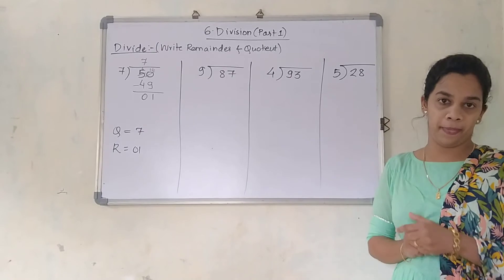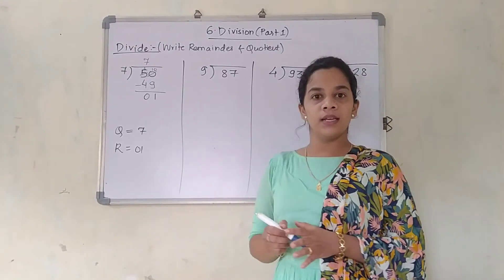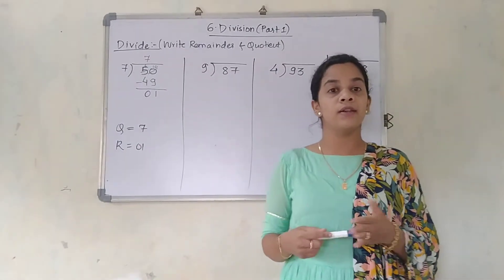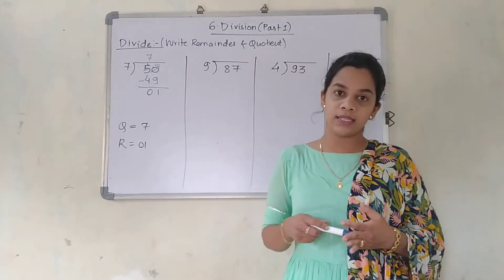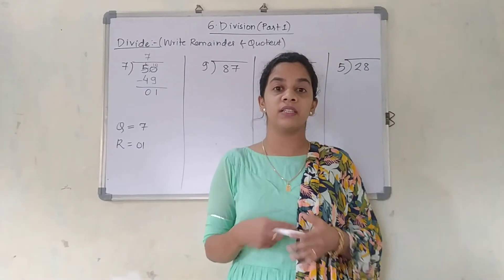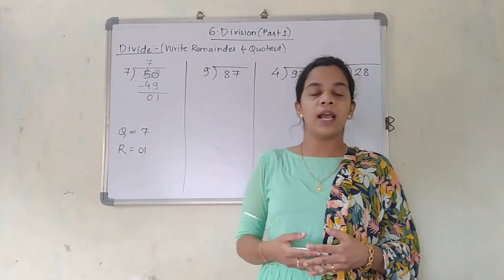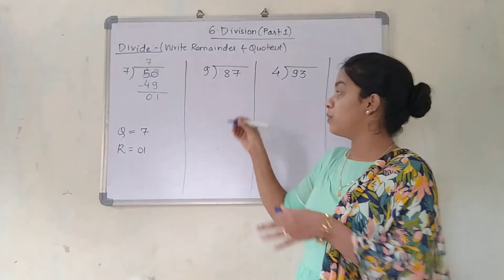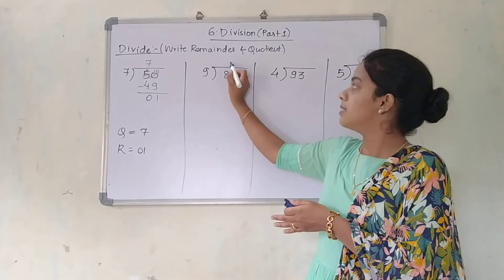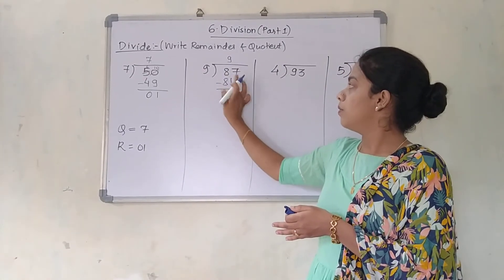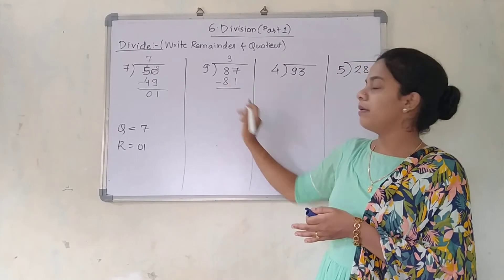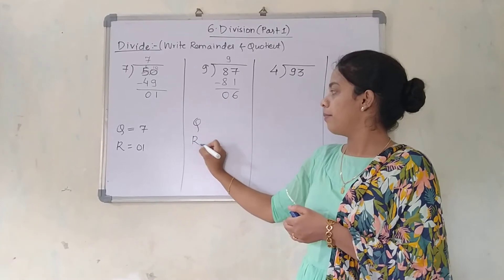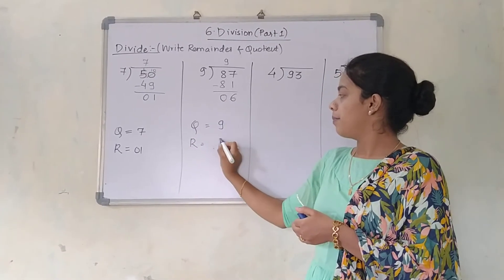The next question is 87 divided by 9. 9 tens are 90. 87 is less than 90, so we can directly use the table: 9 ones are 9, 9 twos are 18, 9 threes are 27, 9 fours are 36, 9 fives are 45, 9 sixes are 54, 9 sevens are 63, 9 eights are 72, 9 nines are 81. Can I take 9 tens are 90? No, it will go bigger. 9 nines are 81 is nearest to 87. So 87 minus 81: 7 minus 1 is 6, 8 minus 8 is 0. The quotient is 9 and the remainder is 6.